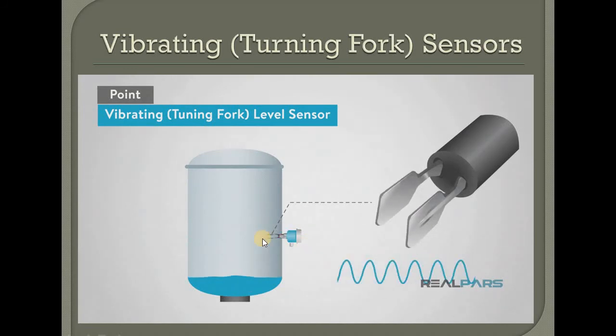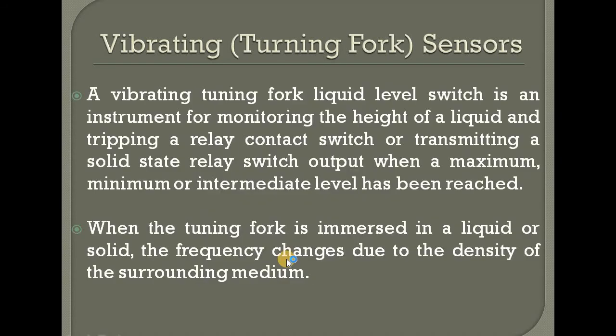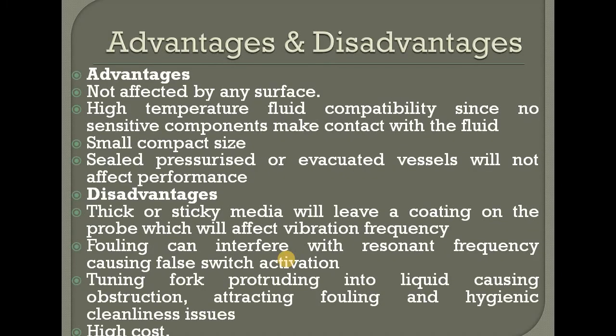The point of the level in vibrating and tuning fork sensors — in the picture of the device, you can see it vibrates. The working principle: vibrating fork liquid level is an instrument for monitoring the highest level of liquid. The relay contact is transmitting as a solid-state relay. Switch output is maximum or minimum. When a tuning fork is immersed in liquid or solid, the frequency changes due to the density of the surrounding media. Advantage: not affected by any surface. Small compact size.